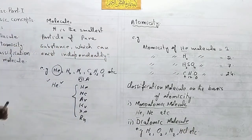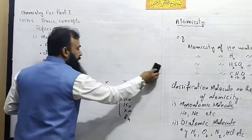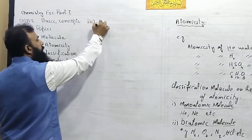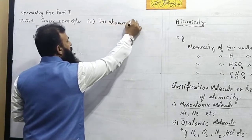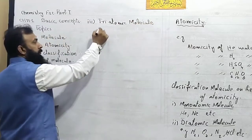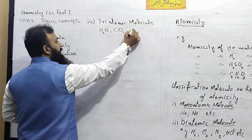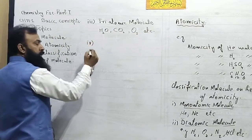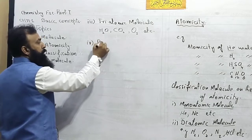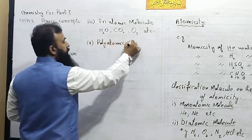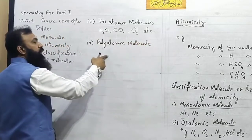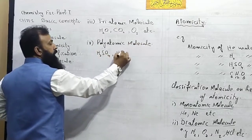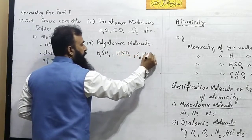Similarly, the third type is the triatomic molecule — a molecule which consists of three atoms, like water (H₂O), carbon dioxide (CO₂), and ozone (O₃). The fourth type is the polyatomic molecule — a molecule which contains more than three atoms. For example: sulfuric acid, nitric acid, glucose, etc.